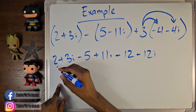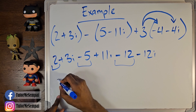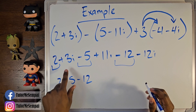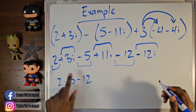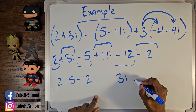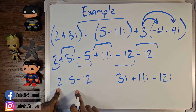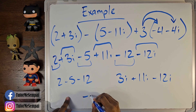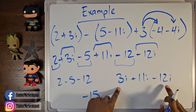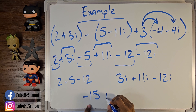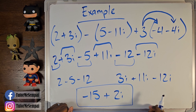Now we no longer have parentheses and we've distributed everything. Let's group our like terms. Our real parts are 2, negative 5, and negative 12 — so that's 2 minus 5 minus 12, which gives us negative 15. Our imaginary parts are 3i, positive 11i, and negative 12i — so 3i plus 11i minus 12i gives us positive 2i. So all of this simplifies to negative 15 plus 2i.